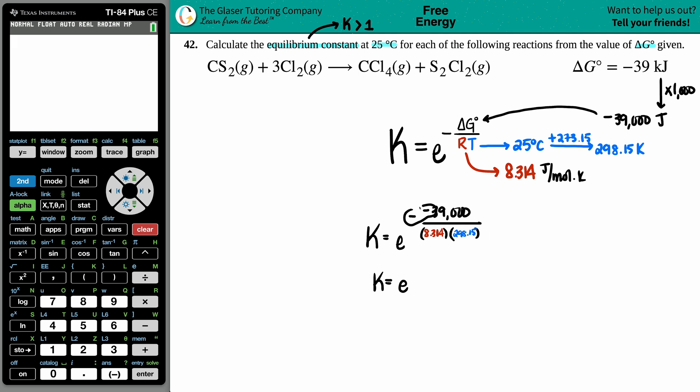Now a negative times a negative is a positive, so I'm going to override the negatives. I'm just going to put 39,000 divided by 8.314. Now since I'm not using parentheses here and I want to show that I need that 298.15 in the denominator, I'm going to press divide - that way the calculator understands that the 298.15 is in the denominator. If I accidentally put times without any parentheses, it really thinks that this number is on the top.